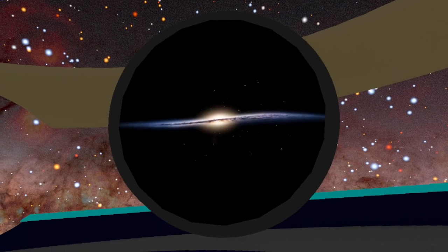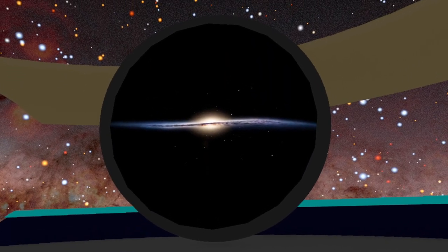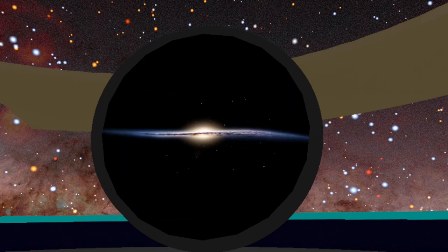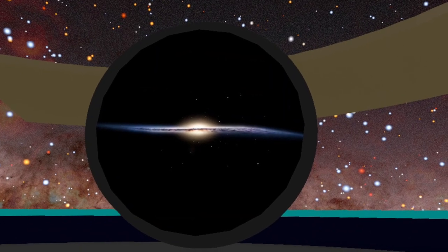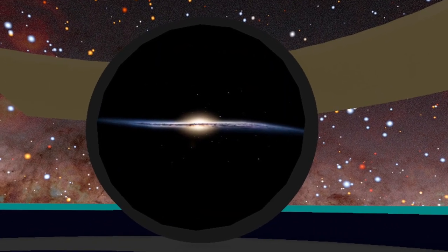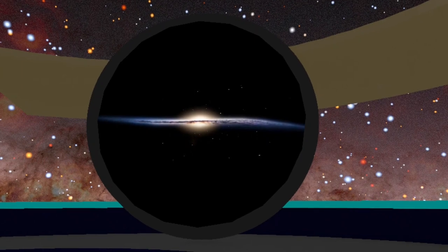Welcome Starfarer. Our home galaxy the Milky Way is a thin disc with a bulge towards the centre and indistinct spiral arms.